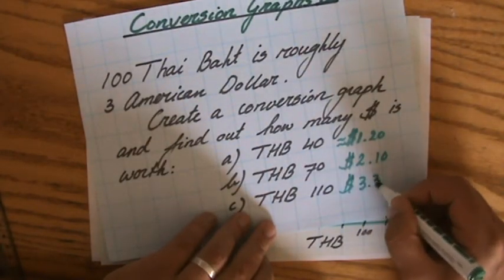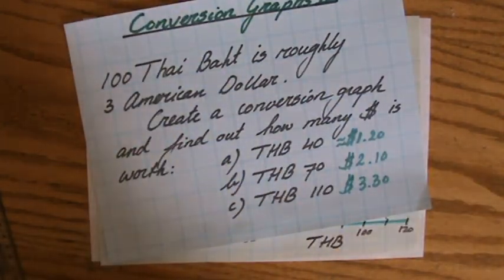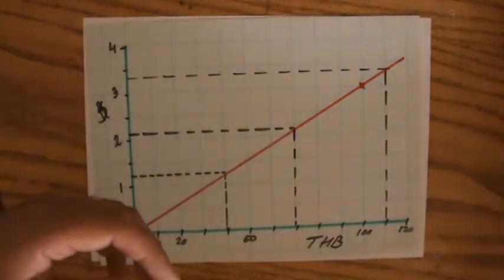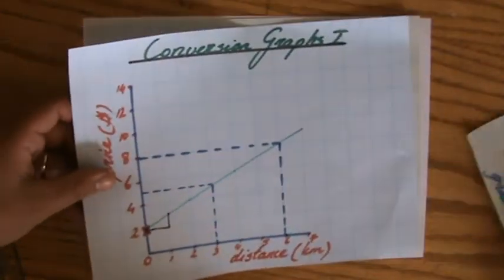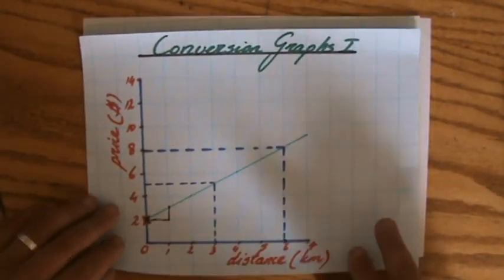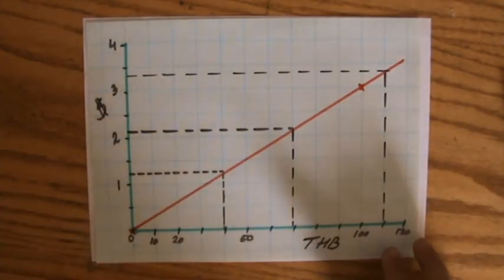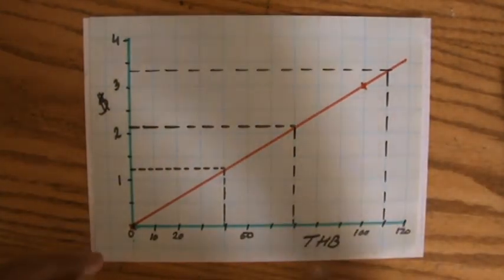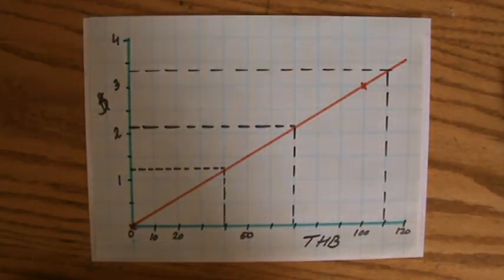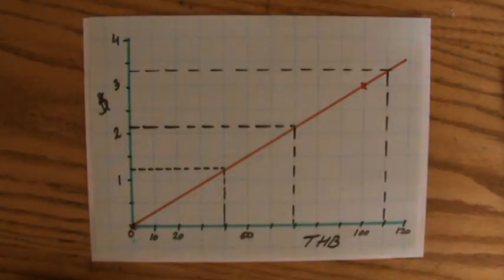All right, there we go. So conversion graphs are used to convert basically one unit into the other. Where in my previous video I had the example of a taxi fare—how much do I have to pay the taxi driver when I drive a particular distance. Check my site, ExplainingMaths.com. Otherwise, quickly go to the next video about distance-time graphs. I'll see you then. Bye bye.